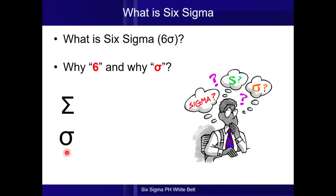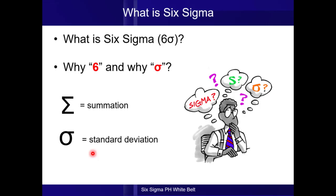Now if you recall your algebra, your basic math, the uppercase sigma in math means summation, while for the lowercase, it means standard deviation. Therefore, Six Sigma means six standard deviations.